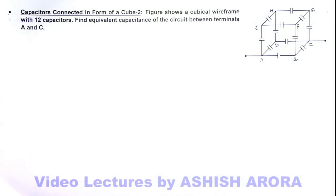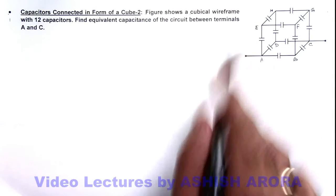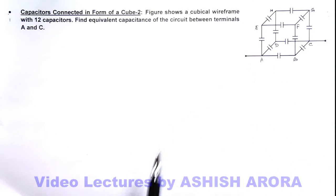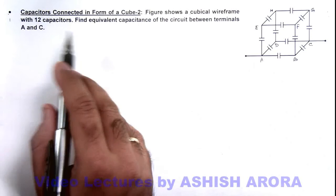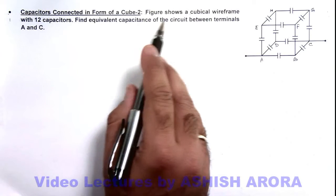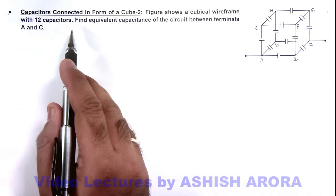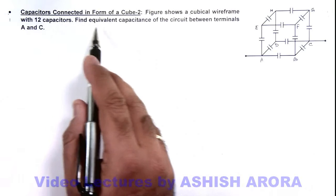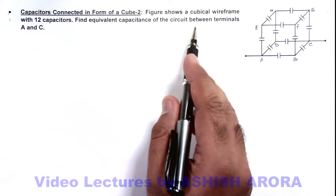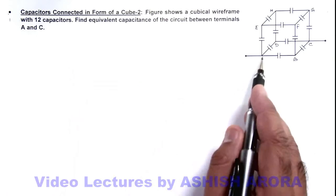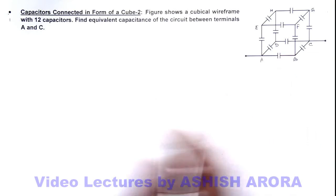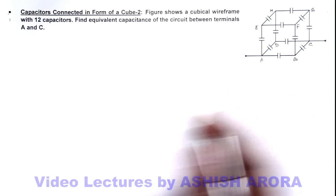In this illustration, we'll again solve a circuit having cubical frame structure with capacitors. Here we are given that the figure shows a cubical wire frame with 12 capacitors, similar to the previous illustration. But here we are required to find the equivalent capacitance of the circuit between terminals A and C. All capacitors are of capacitance C.